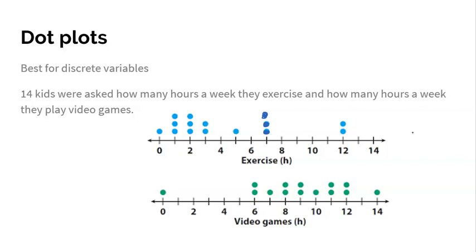The number line went from zero to 14 because I had no values beyond that — you need to cover all of your data. The increments go by ones even if not all are labeled. Looking at the distribution, video games ranged from zero to 14 hours a week, but most kids were six to twelve hours a week. Dot plots are really easy and work best with whole numbers, though they can be used for either discrete or continuous data if values are whole numbers.